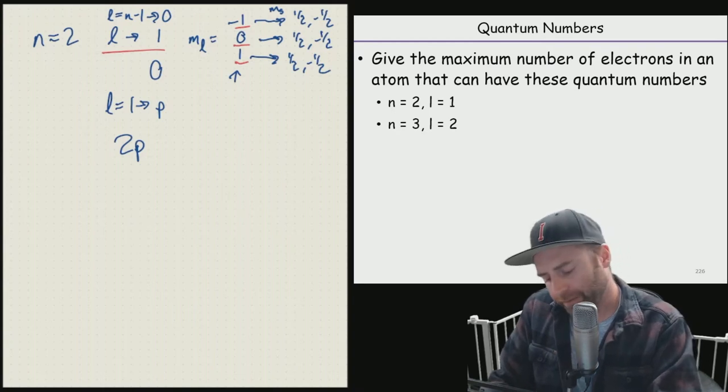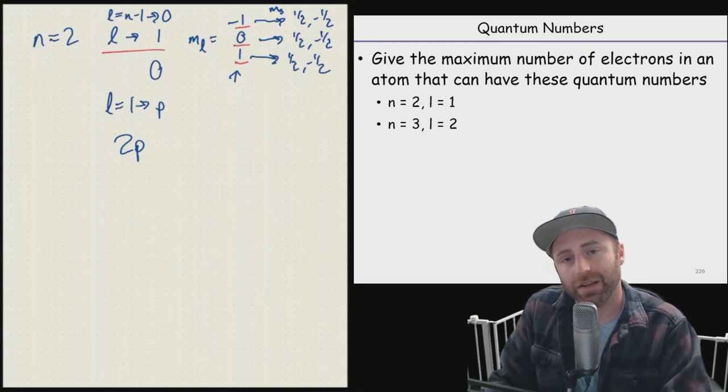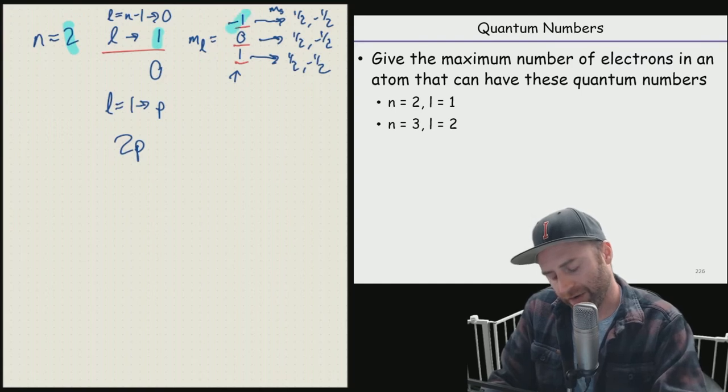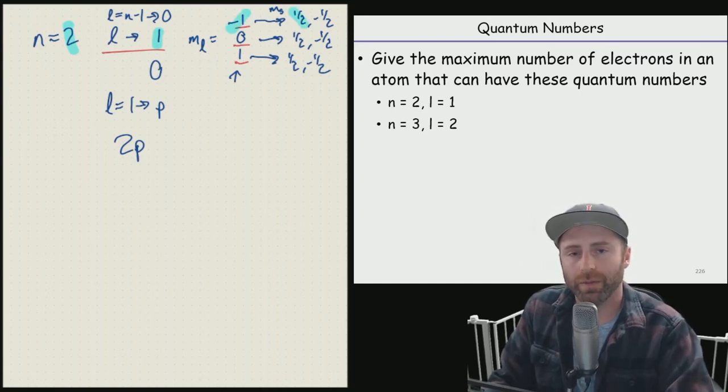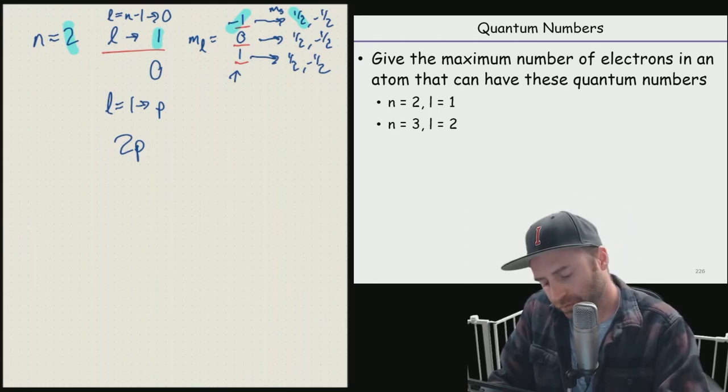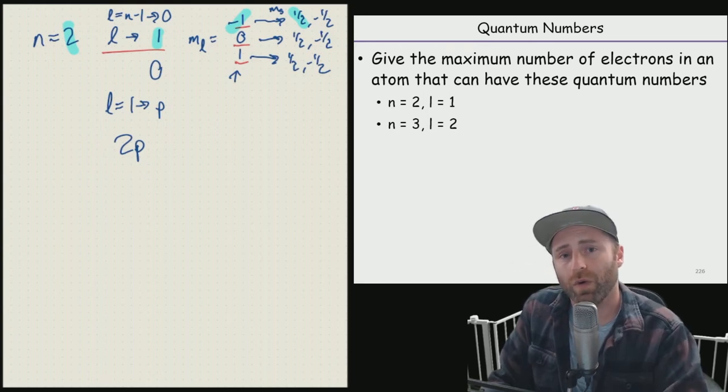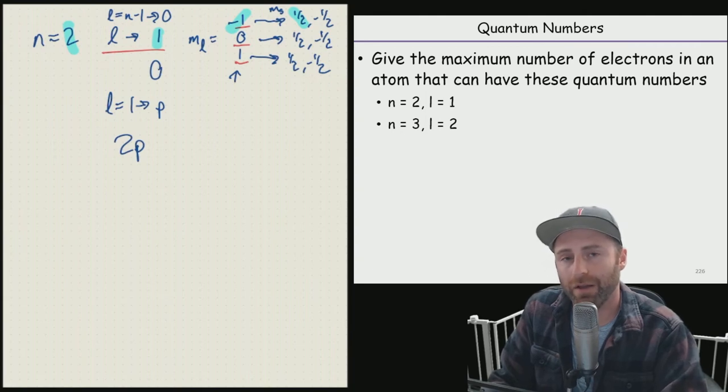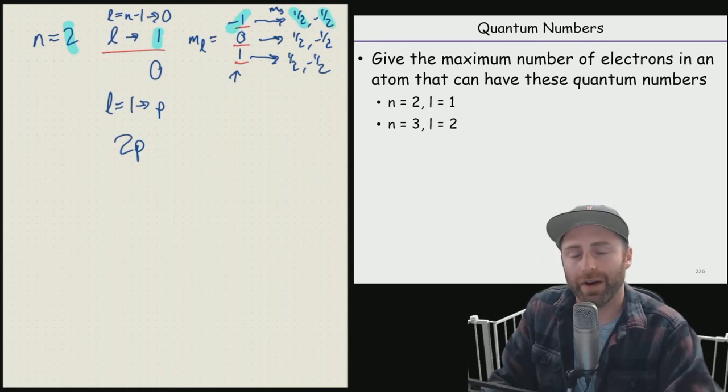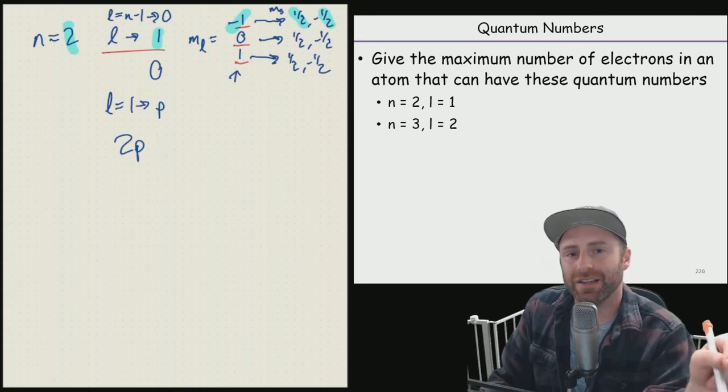That spin quantum number is actually going to tell us the number of electrons that we have. Because if you remember, each set of quantum numbers, we have to have four quantum numbers for every single electron. So what I've got highlighted right now would be one electron with N equals two, L equals one, M sub L equals negative one, and M sub S equals positive one half. We could though take that two, one, negative one, and we could have negative one half. That's two separate sets of quantum numbers.